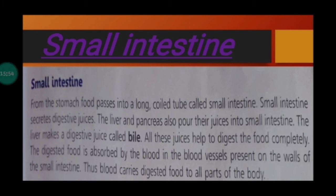The liver makes a digestive juice called bile. All these juices — from the small intestine, pancreas and liver — help to digest the food completely. The digested food is absorbed by the blood through vessels present on the walls of the small intestine. Thus, blood carries the digested food to all parts of the body.